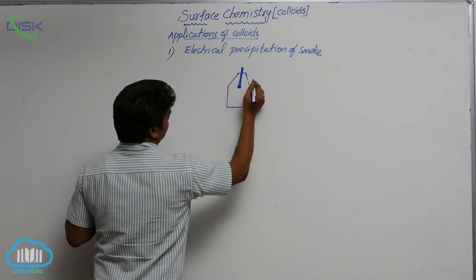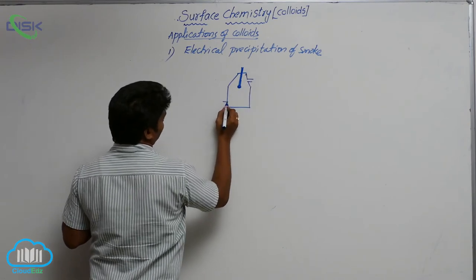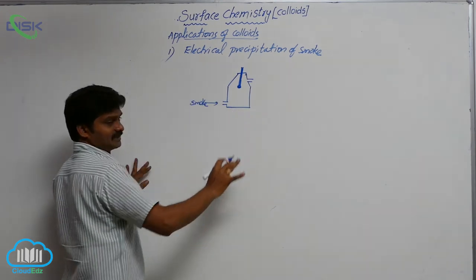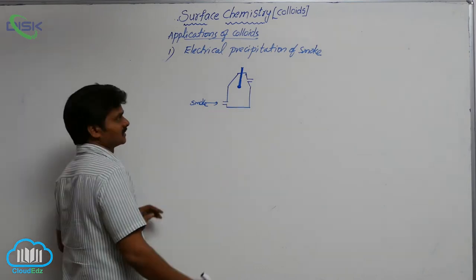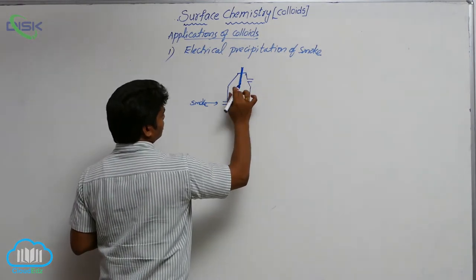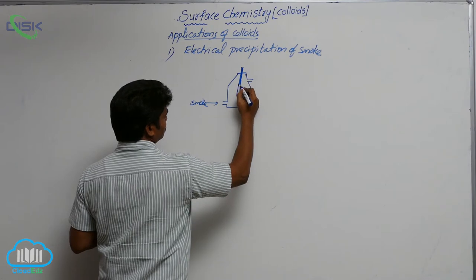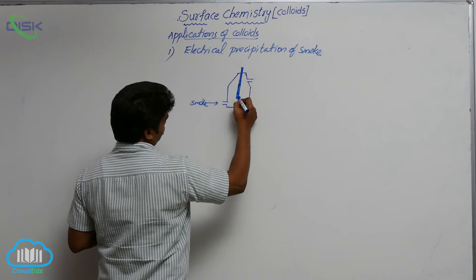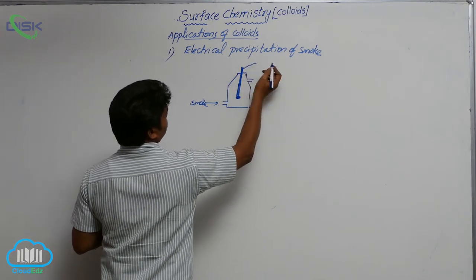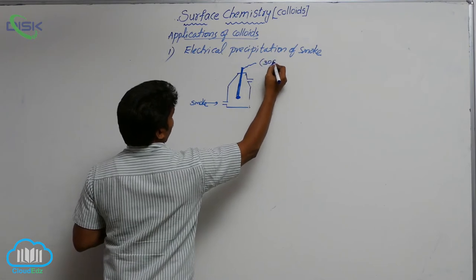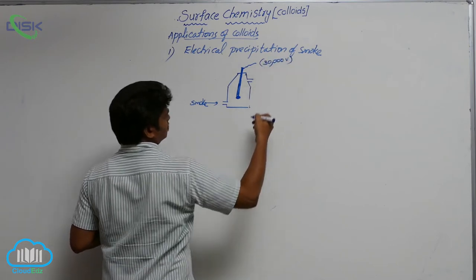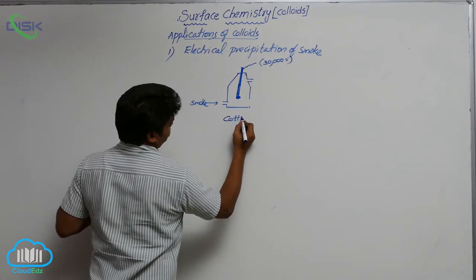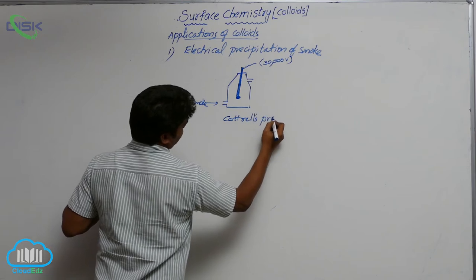The Cottrell's precipitator has an inlet for smoke and an exit for gases. It contains an electrode with opposite charge at around 30,000 volts potential. When the smoke particles come into contact with this electrode, they get coagulated.